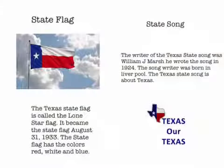The state flag. The Texas state flag is called the Lone Star flag. It became the state flag on August 31, 1933. The state flag has the colors red, white, and blue.